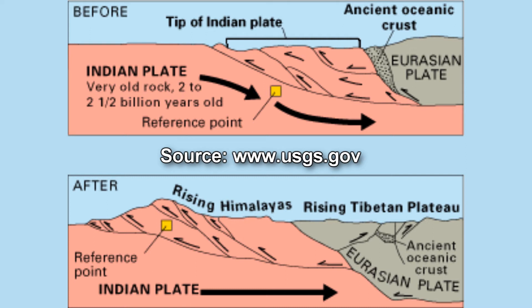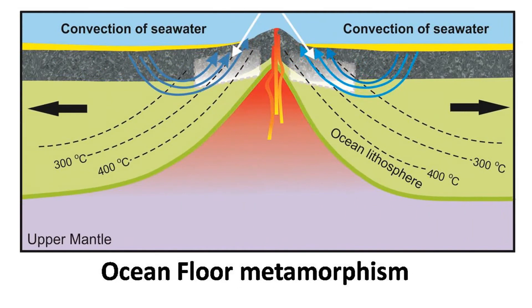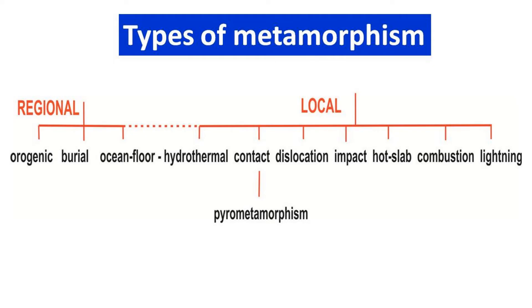This is also an example of the regional metamorphic type. So besides regional metamorphism with no significant plate movement — such as burial and ocean floor examples — and the other where regional metamorphism occurs at active plate margins with significant plate movement, we will now look at other examples of types of metamorphism.